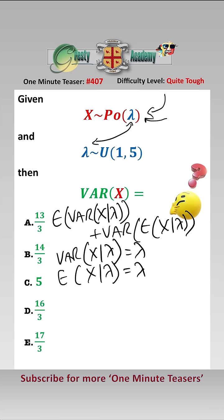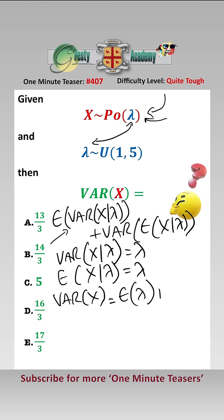Therefore Var(X) is equal to — putting it into the formula — E[λ] plus Var(λ). So we now look at the random variable λ.